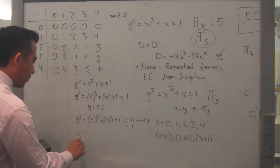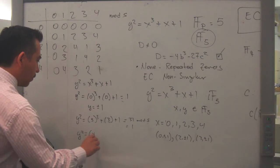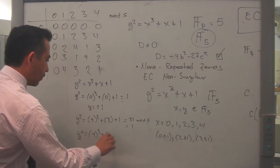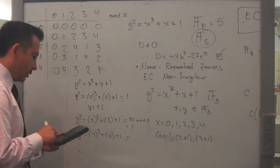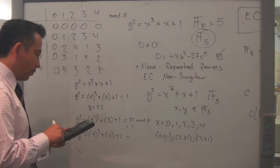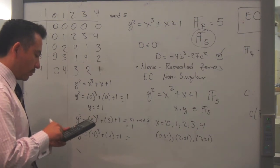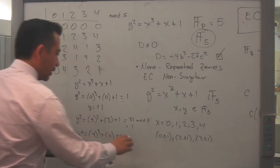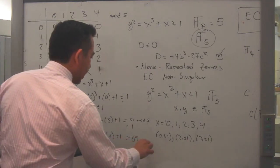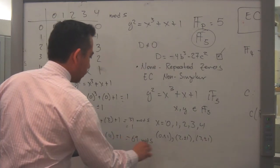Okay, now the next number I will use is 4 to the cube plus 4 plus 1, that is equal to 4 to the cube plus 4 plus 1, that is equal to 69, 69 mod 5 is equal to 4, right? That's equal to 4.